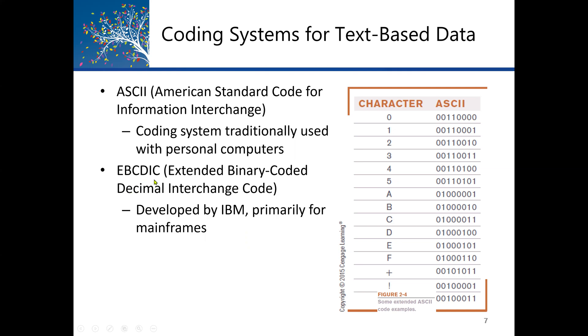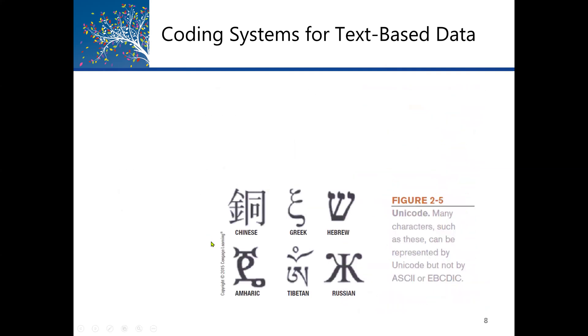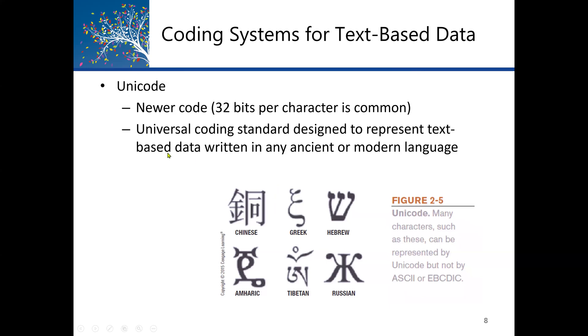EBCDIC was developed by IBM primarily for mainframe computers. We also have the Unicode standard system, which is the newer code. It has 32 bits per character, so it's bigger. It also covers many different languages. Universal coding standard designed to represent text-based data written in any ancient or modern languages, for example Greek, Hebrew, Chinese, etc. This Unicode has replaced ASCII as the primary text coding system. This is why we may have a computer and our keyboard and can use it for English text. Sometimes we can change it and use it for Japanese text. This means the computer is using the Unicode standard for most international languages.